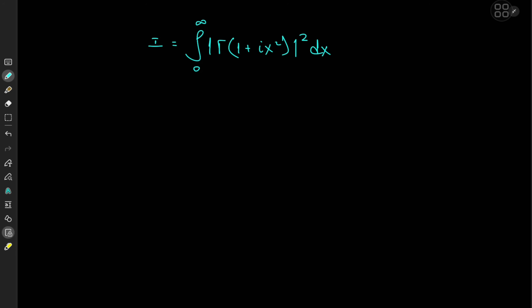So how exactly do we begin our attack of this integral? One interesting fact is that Γ(z̄) = Γ(z)̄, which is very trivial to see using something like the Weierstrass definition of the gamma function, so this is going to come in handy quite a bit. This and the fact that |z|² = z · z̄, because we are integrating the modulus squared of a complex number.